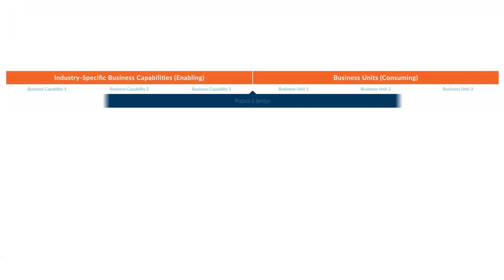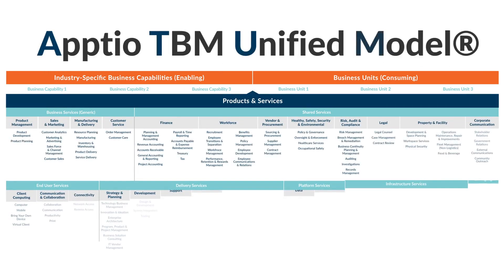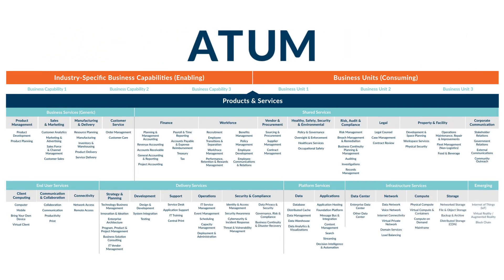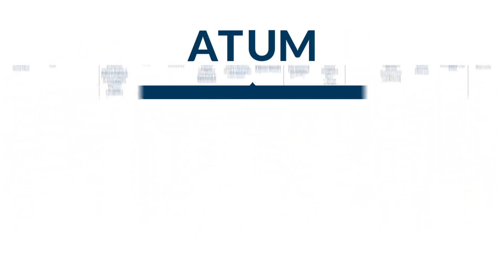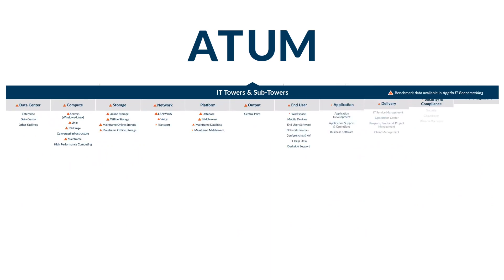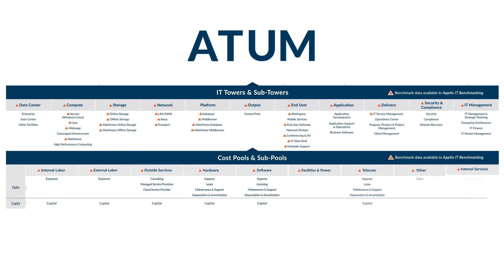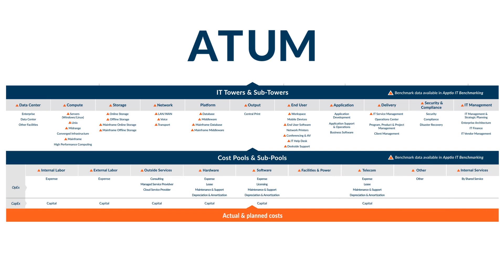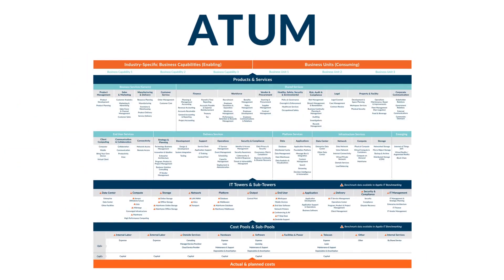This knowledge is codified into the Apptio TBM Unified Model, or ATOM, and is embedded directly into Apptio's TBM SaaS products. With the standard TBM taxonomy at its core, ATOM defines a comprehensive best practice financial model for IT based on three components.